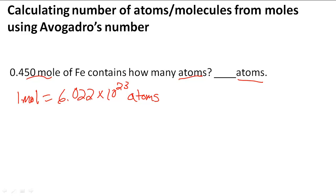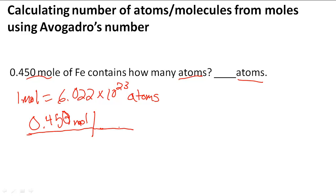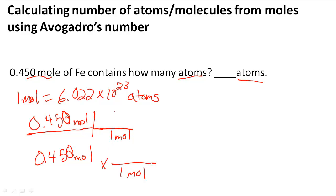The 6.022 times 10 to the 23rd is Avogadro's number. So what we have to do is write 0.450 moles, and then we're going to use this t-chart — or you can write it as 0.450 moles — and use this as a conversion factor. We want 1 mole at the bottom so that we can cancel out the units.